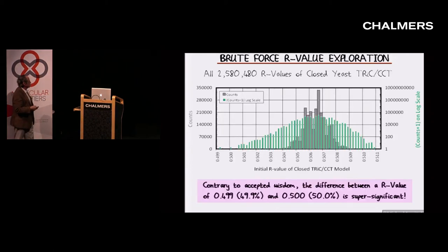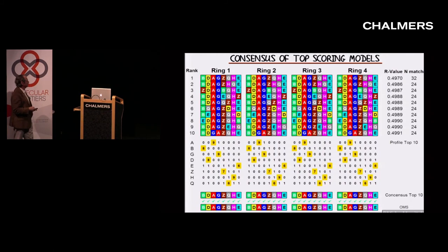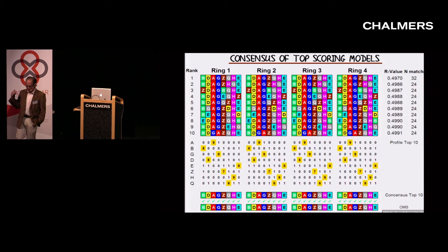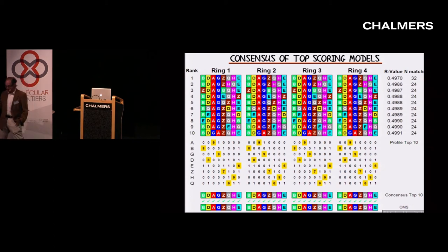We took ten structures and found something very interesting. This is the structure with the best R value — the lowest R value, 0.497. Then the next best one, 0.4986. We had to modify the program to put out values to six decimal places, because the original program only put them out to three decimal places and we would have lost all those distinctions.